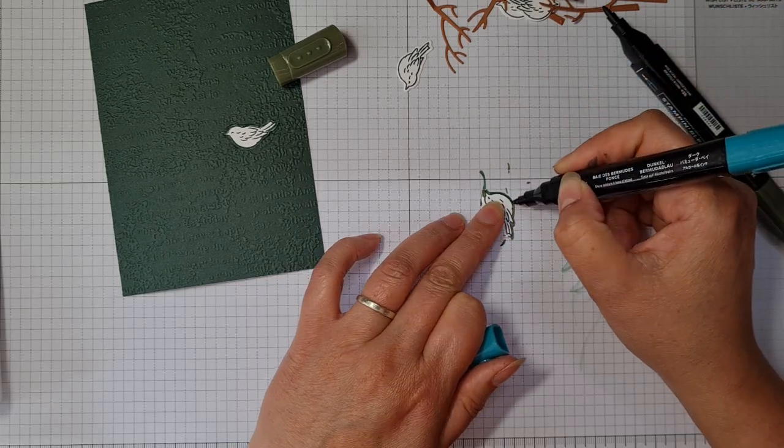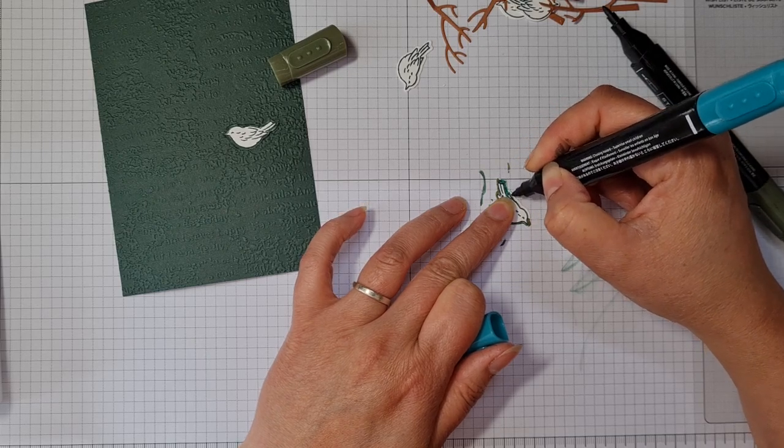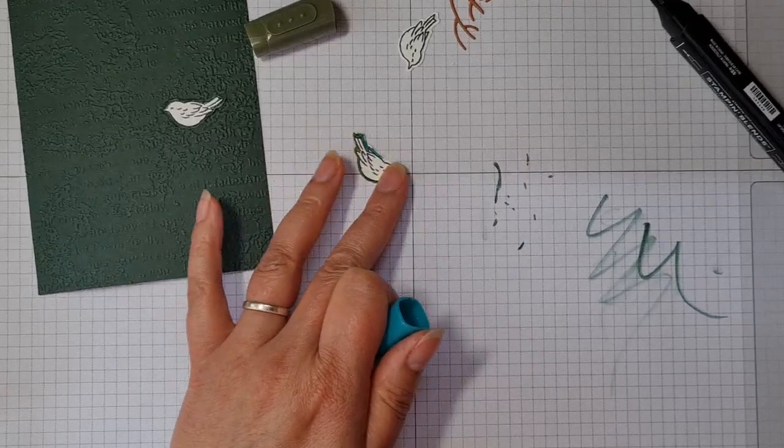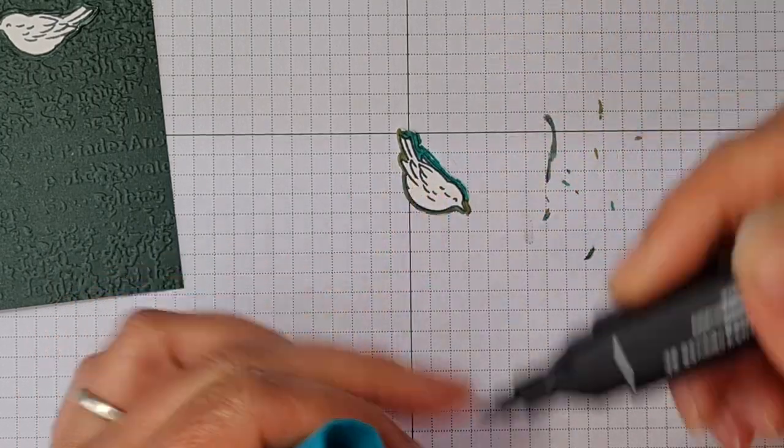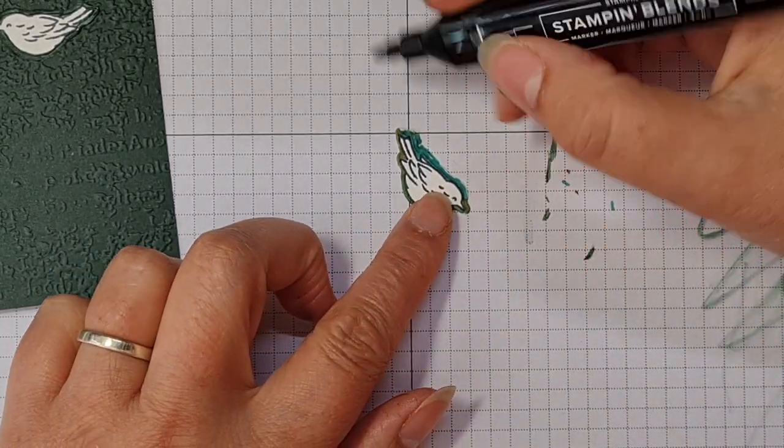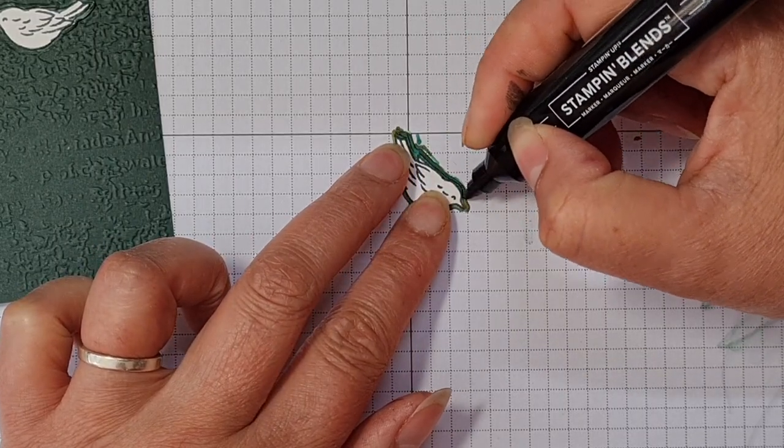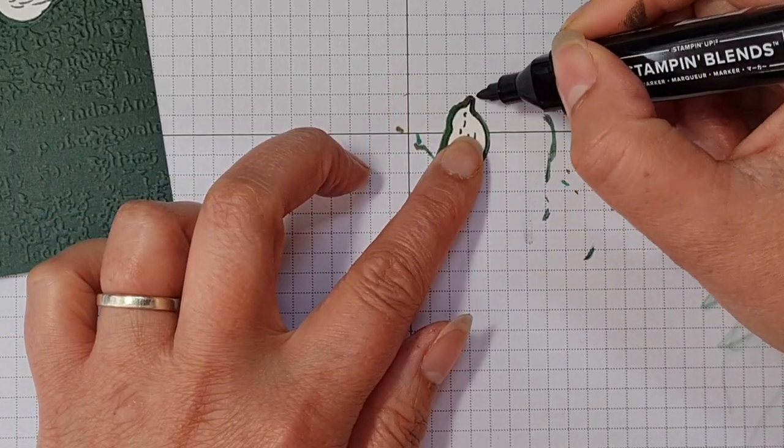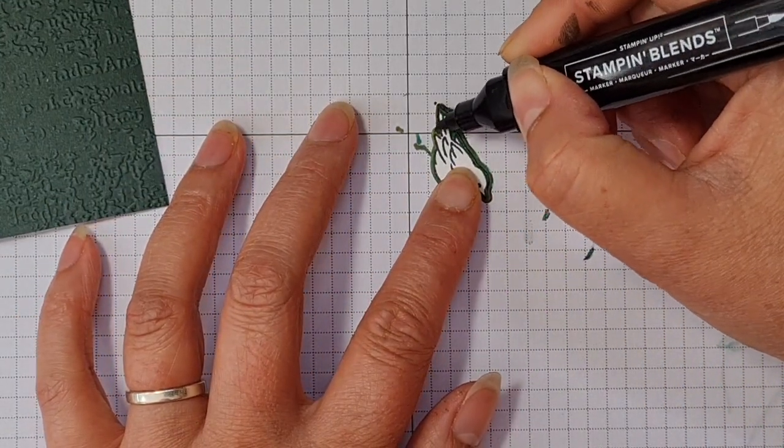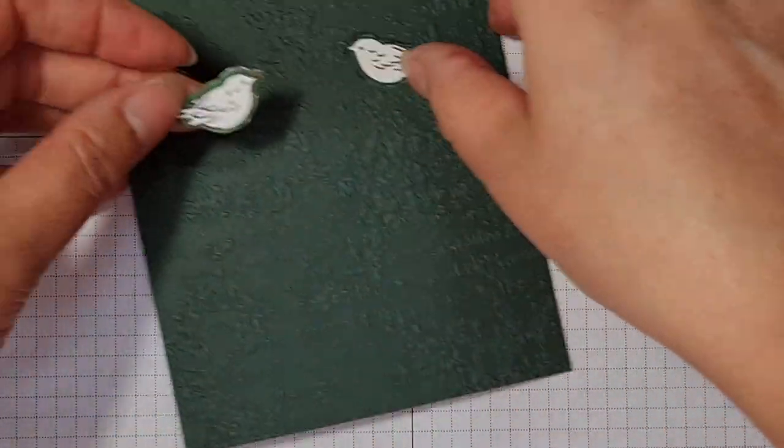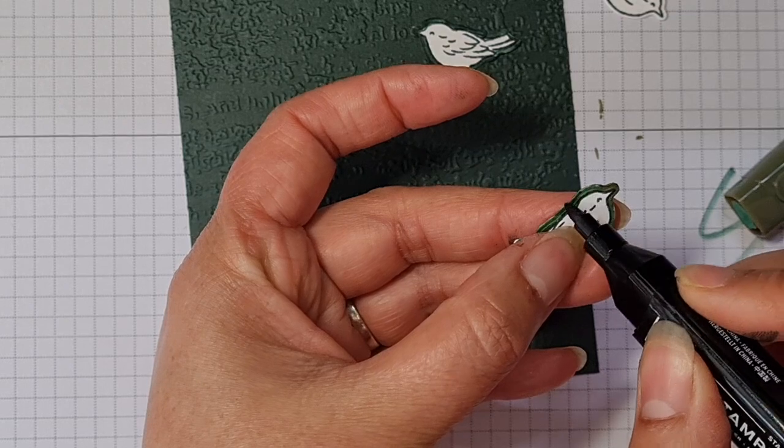I'm going to have a go seeing what it looks like if I do Bermuda Bay first and then Mossy Meadow on the top. So let's zoom in just a wee bit so that you can see what I'm doing. Colouring in right around the corner there. So sometimes us crafters, we have to use these nifty little tricks to get around problems. We don't always have absolutely everything in stock in our craft room. So we just have to make do.